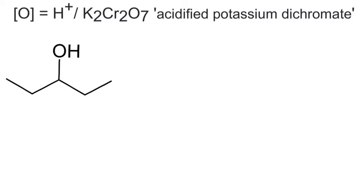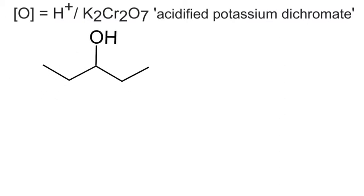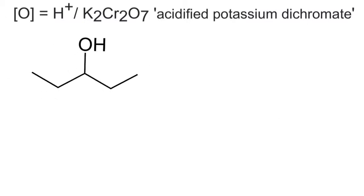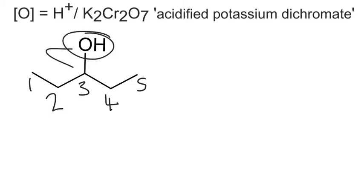The example I'm going to use is this structure here, which is pentan-3-ol. I can tell it's pentan-3-ol because if I number my carbon chain I've got one, two, three, four, five — a five-carbon chain, which is 'pent' — and I can see the OH group is clearly positioned on carbon number three, so that's pentan-3-ol.